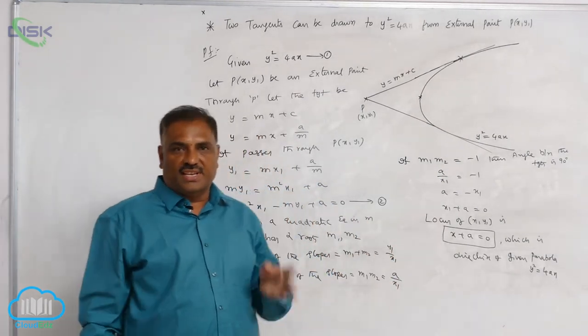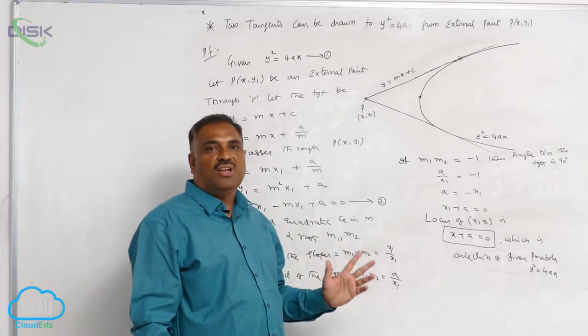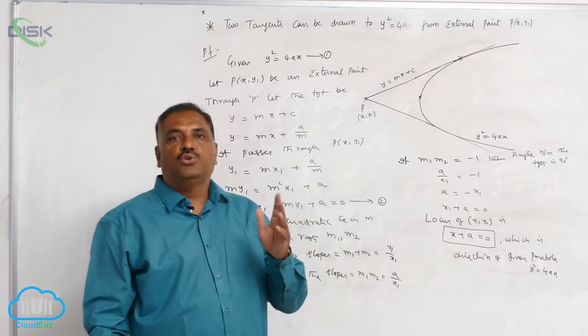So the final conclusion is: a maximum of two tangents can be drawn from external point to a given parabola.